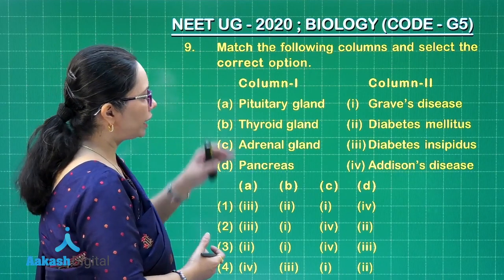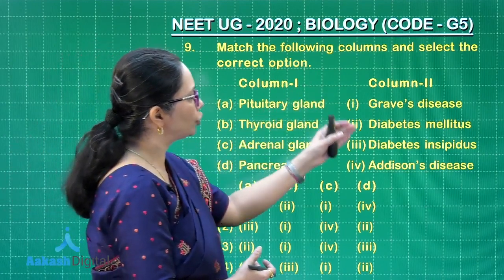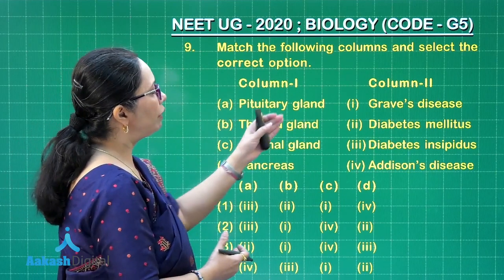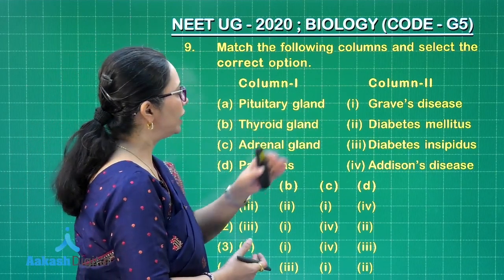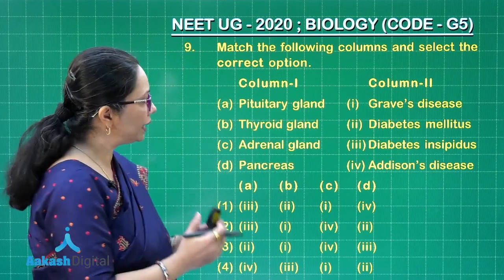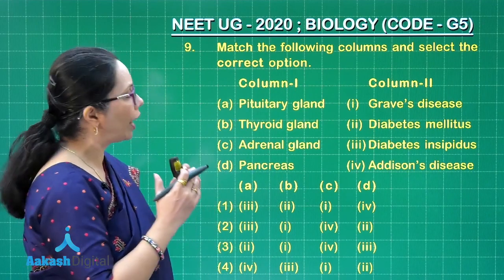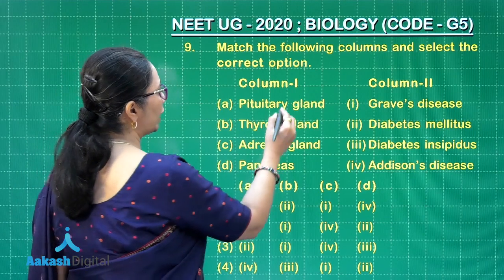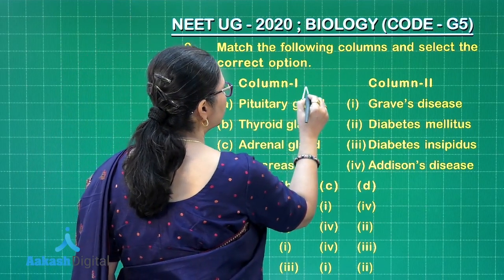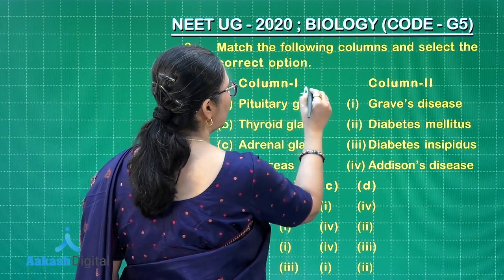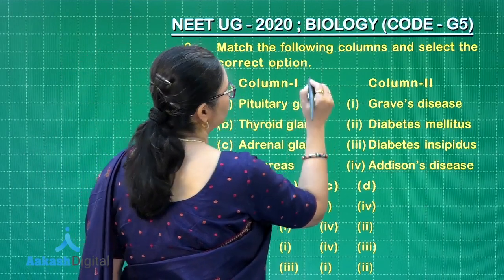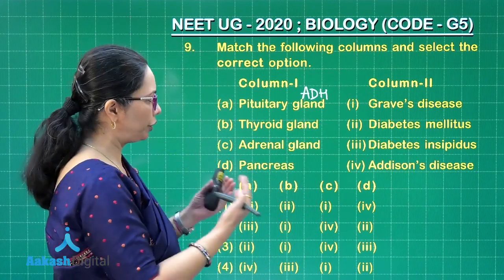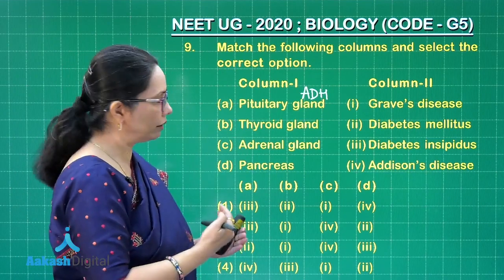If we see pituitary gland, out of the 4 choices given, the only thing that we can match with it will be diabetes insipidus, because diabetes insipidus is due to hyposecretion or lack of ADH. Although ADH is not a secretion of the pituitary — it is a secretion of the hypothalamus — it is released from the pituitary, so we will have to consider that.